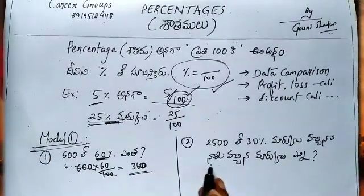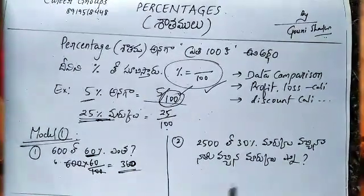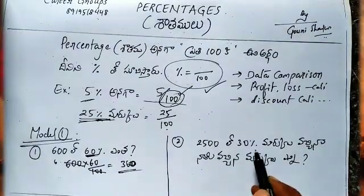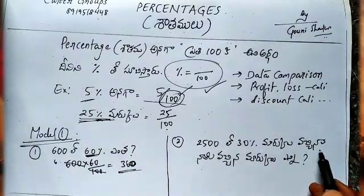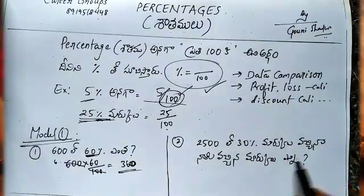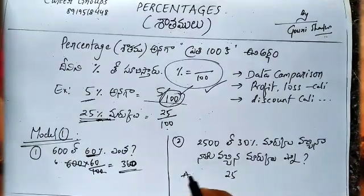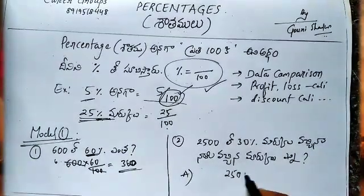Second problem: in 2500, 30% marks. Answer in 2500 — 30% means 30 by 100.